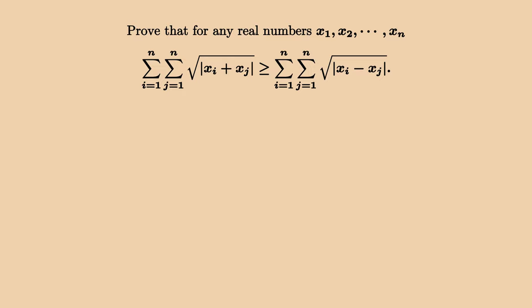Our second problem is to prove that for any real numbers x1 to xn, summing up the square root of the absolute value of xi plus xj is larger than summing up the same thing on xi minus xj.